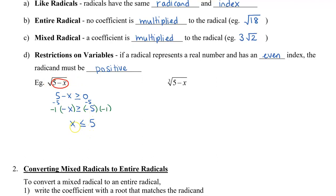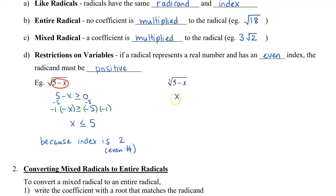If you plug in some numbers such as 4 or 3, this means that we'll have 5 minus 4 — we have the square root of 1, and we can do that. But if x is bigger than 5, such as 6, if we have 5 minus 6, that won't work because we'll have the square root of negative 1. So this restriction needs to be applied because the index is 2, which is an even number. Now the second example: I have the cube root of 5 minus x. In this case there is no restriction, so we could say that x is all real numbers, because the index is odd.